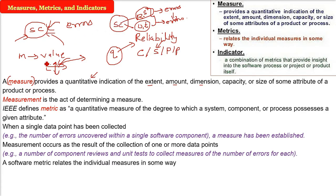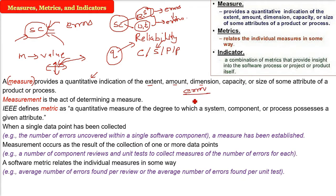So a software metric relates the individual measures in some way. How do we relate? For example, we found some certain errors. So the errors found per review. And what is the average of this errors? That is the number of error per review. What is the average value of this errors per review is a metric. Or the number of errors per unit test. What is the average rate? This is a metric.